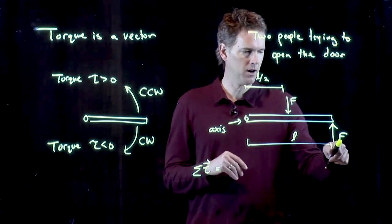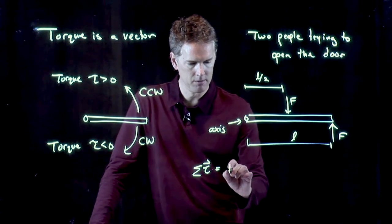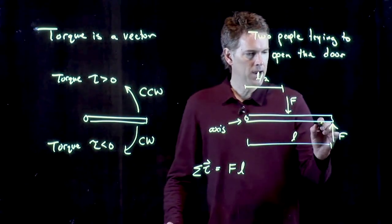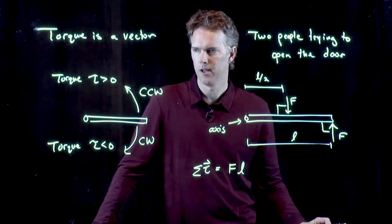All right, if the other force isn't there, and this one is the only one, it's going to go like that, and that is our positive quantity. If these are right angles, then the lever arm is just the full length of the door, L.